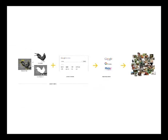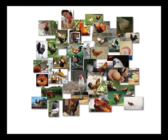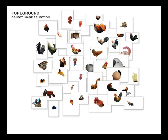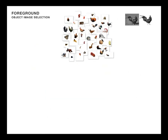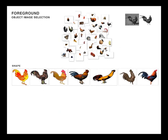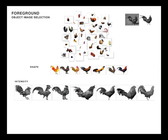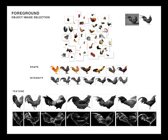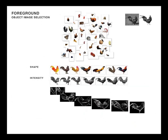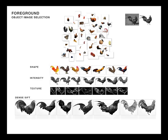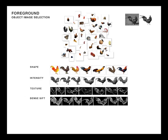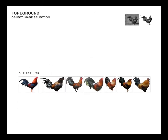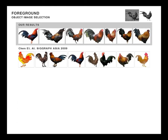To find the most suitable of the downloaded images for our colorization task, our system filters them by segmenting the salient foreground regions and comparing them to the grayscale foreground object in terms of shape, intensity, texture, and dense SIFT features.